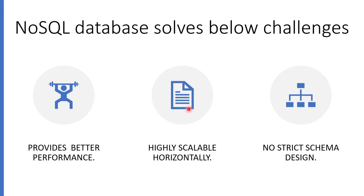With RDBMS you keep adding computing power and storage within the same box. The best part of NoSQL database is there is no strict design. In a traditional RDBMS database, if you have a table with two columns and the requirement changes, you have to change the table definition or create another table and reference them. But in NoSQL, there is no such restriction — within one collection you can insert documents with multiple fields however you need.